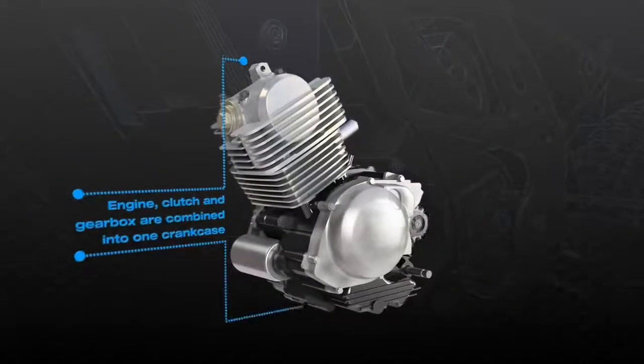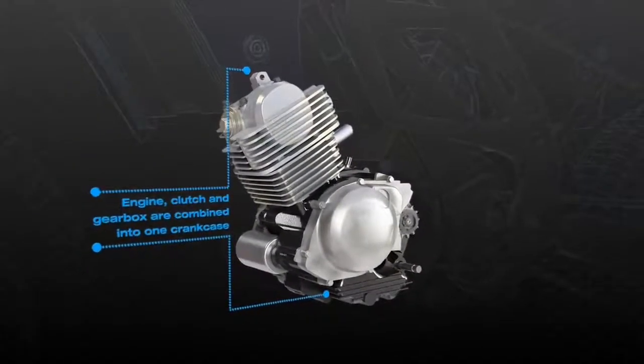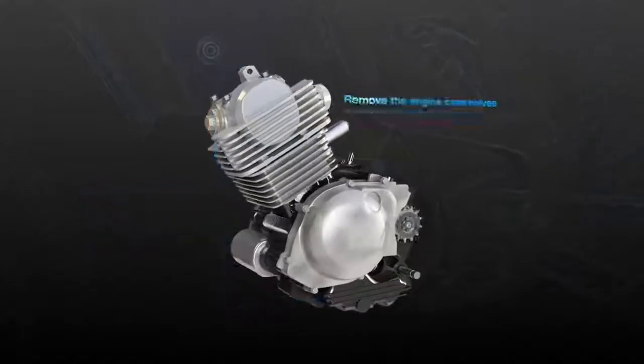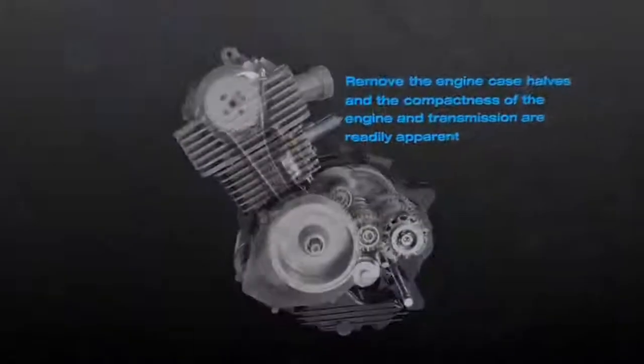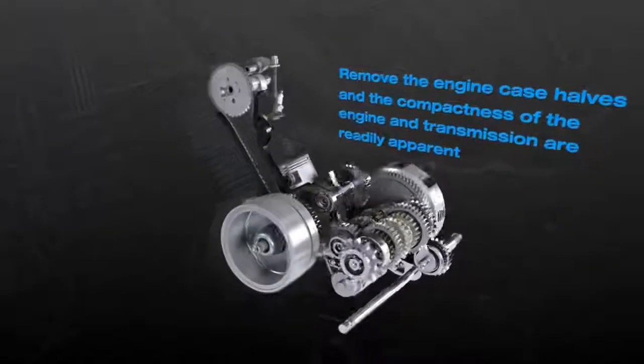That's why the engine, clutch and gearbox are combined into one crankcase. Remove the engine case halves and the compactness of the engine and transmission are readily apparent.